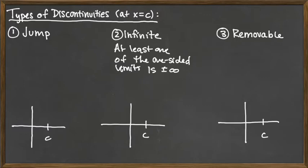It's not required that they match. It's not required that both sides are going to plus or minus infinity. It's saying at least one of the sides is going to plus or minus infinity. Notice we're going to get a vertical asymptote there.